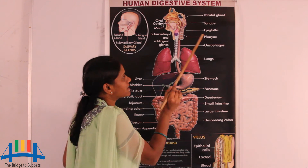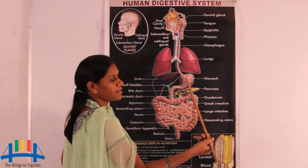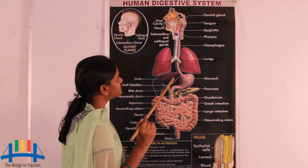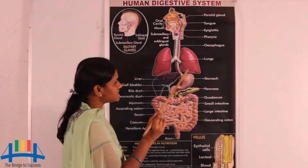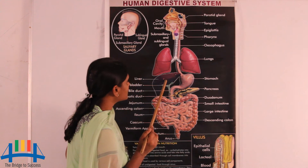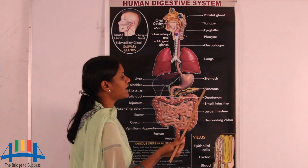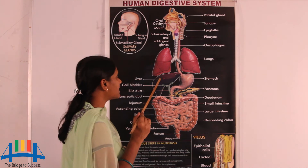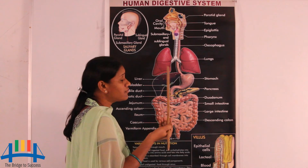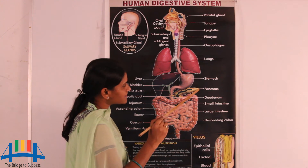When food enters the stomach, the digestion process continues. The stomach is the largest part of the alimentary canal. On the right side of the stomach, the liver is present, and on the left side, the pancreas is present. The liver releases bile juice, and bilirubin from the bile helps in the digestion of fat in the stomach.